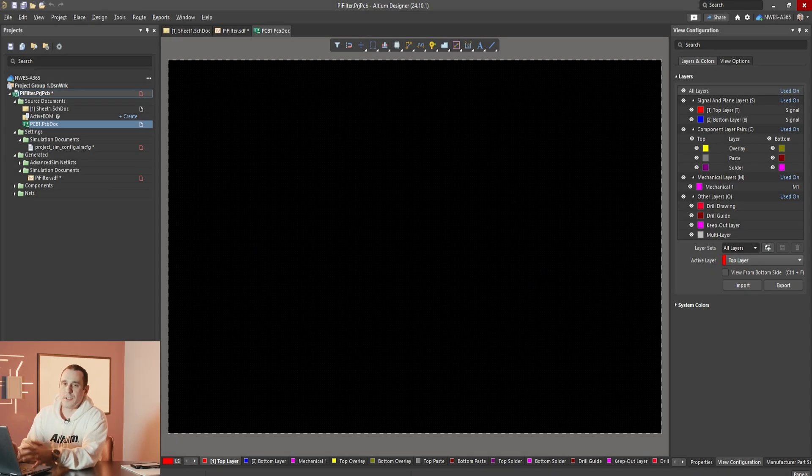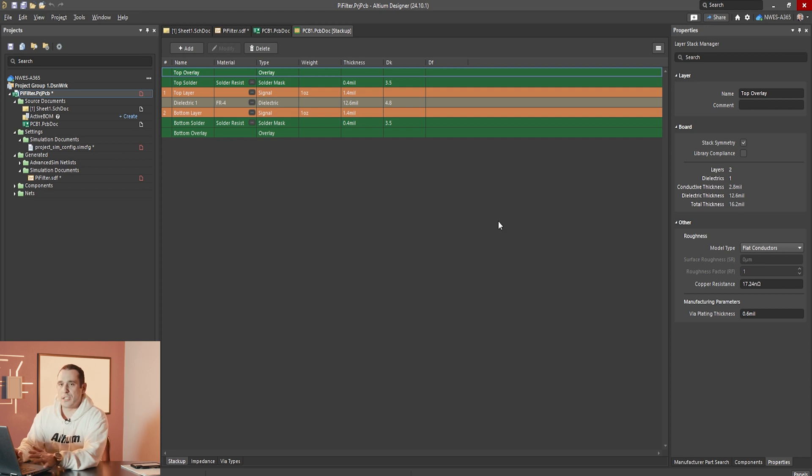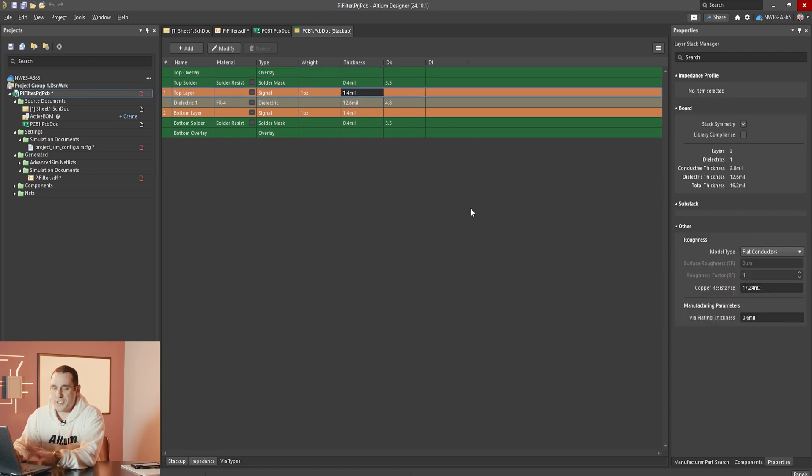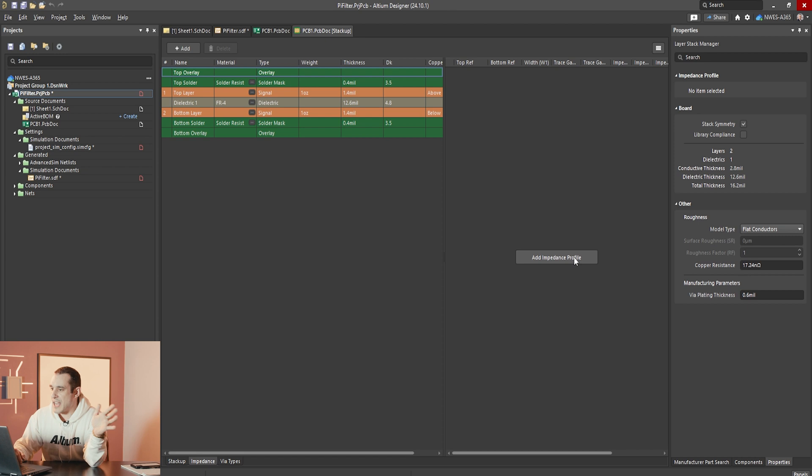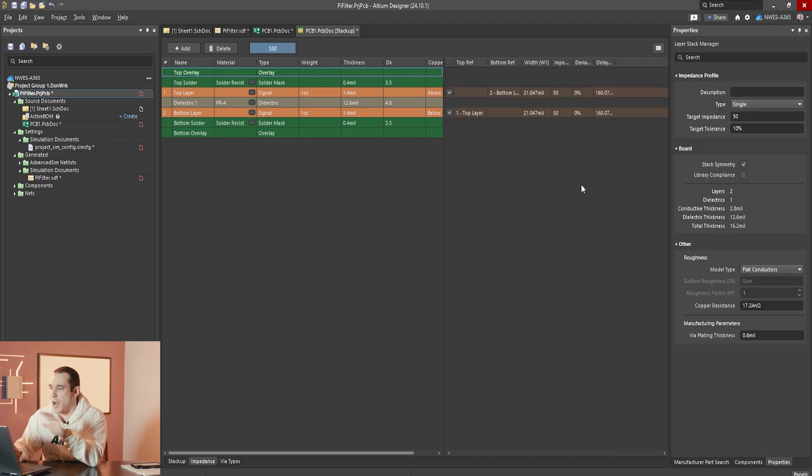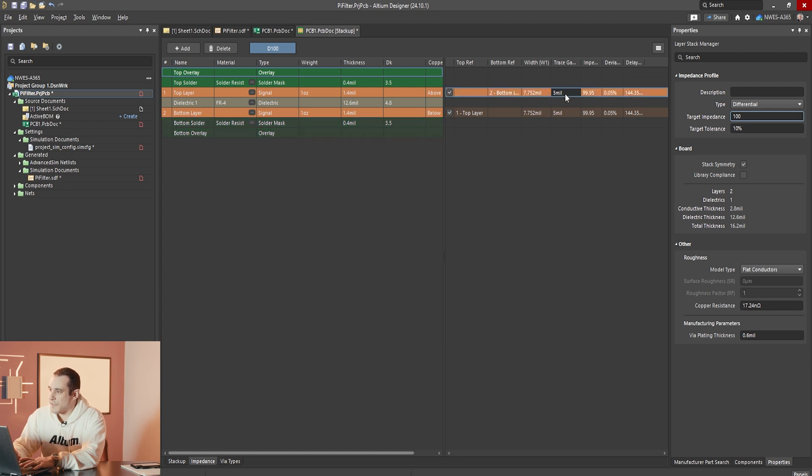So I'm inside of Altium Designer and I have a new PCB opening up the layer stack manager and what we want to do is look at what happens with differential pairs when we bring the spacing really close together and what happens when we start to move the ground near or far from the traces. Now let's just suppose for a moment that I just have a two layer board. So we're going to look at microstrips and we're going to have the bottom layer be ground and we'll have the top layer be our traces.